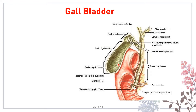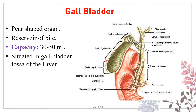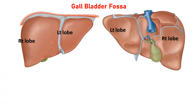Coming to the gallbladder: it's a pear-shaped organ, a reservoir of bile, with a capacity of approximately 30 to 50 ml, situated in the gallbladder fossa of the liver. On the inferior visceral surface of the liver, near the inferior sharp border, we have a depression called the gallbladder fossa where the gallbladder is located. It is connected to the porta hepatis by the cystic duct.